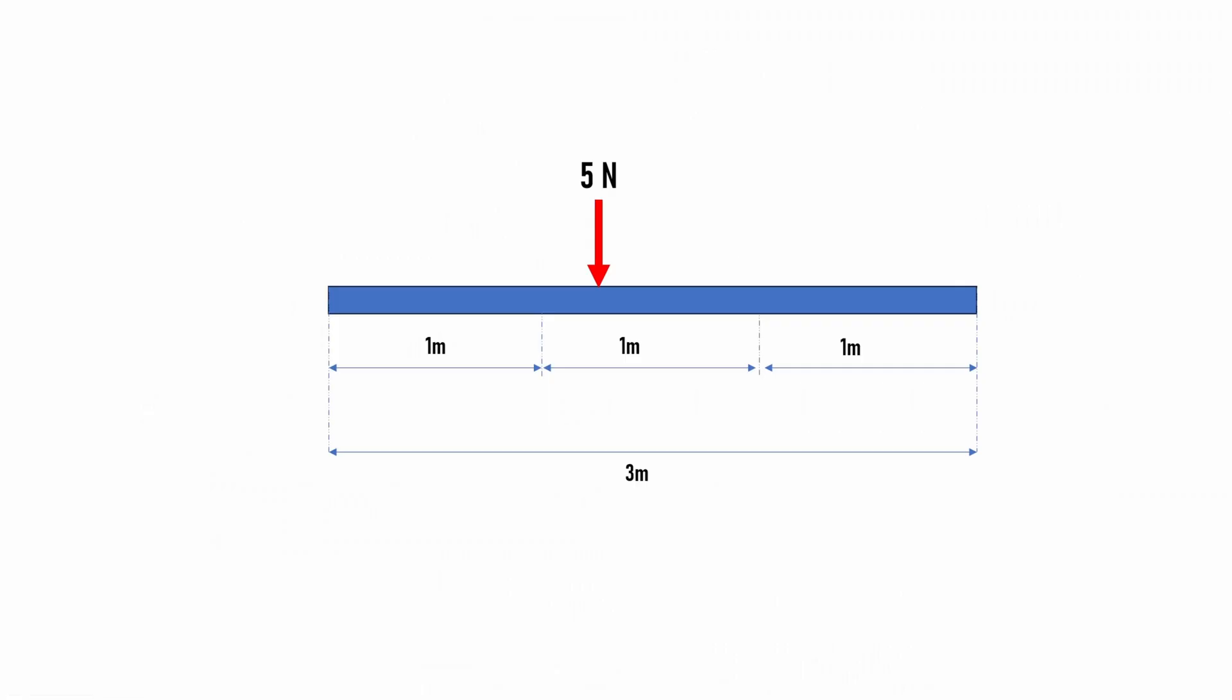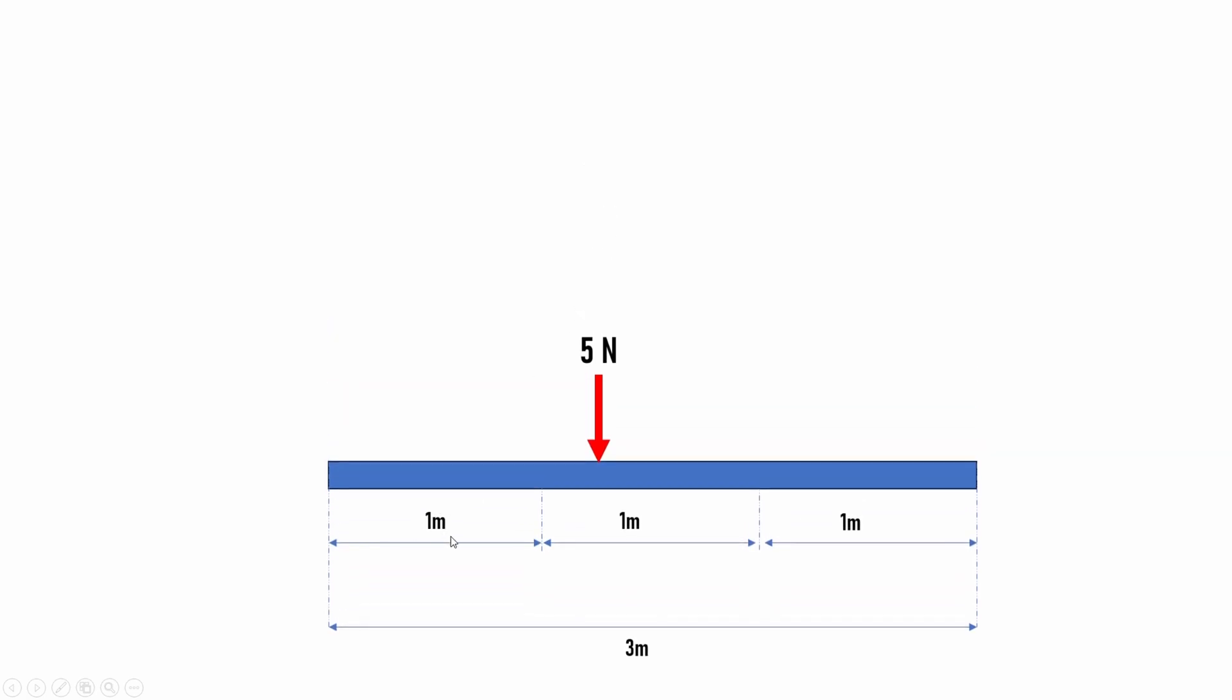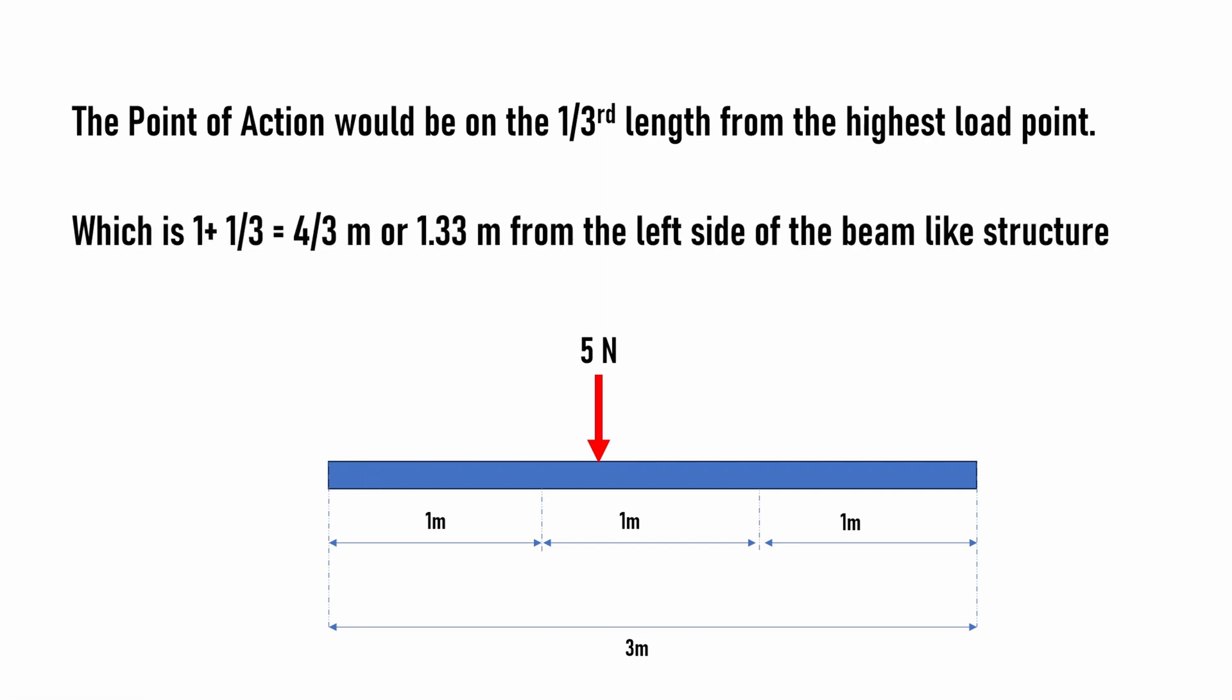The location of this particular point load would be at one-third of the length of the force. The force was acting on 1 meter length, so it would be one-third from the peak, right around this position. This means we have to add this 1 meter plus this one-third to get the overall distance from the left side.